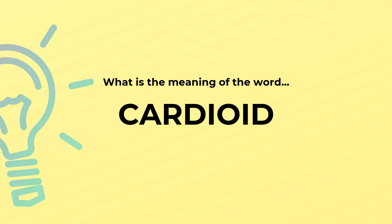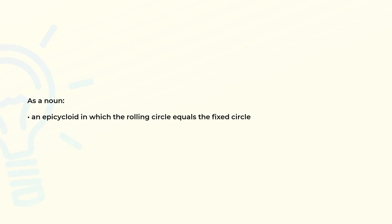What is the meaning of the word cardioid? As a noun: an epicycloid in which the rolling circle equals the fixed circle.